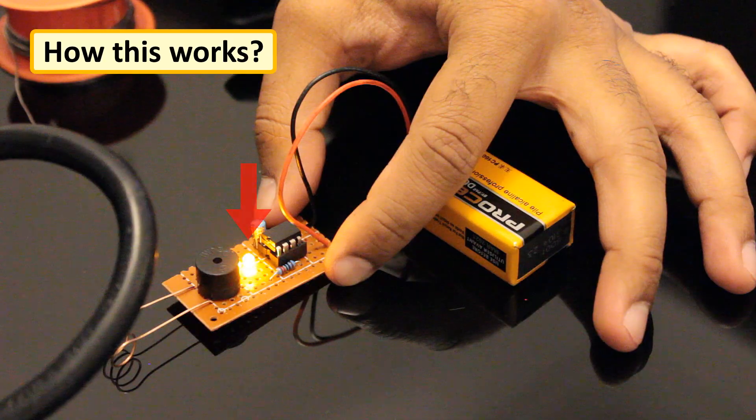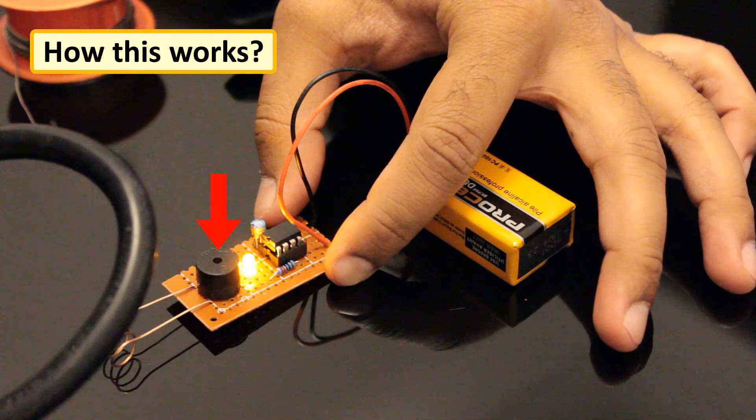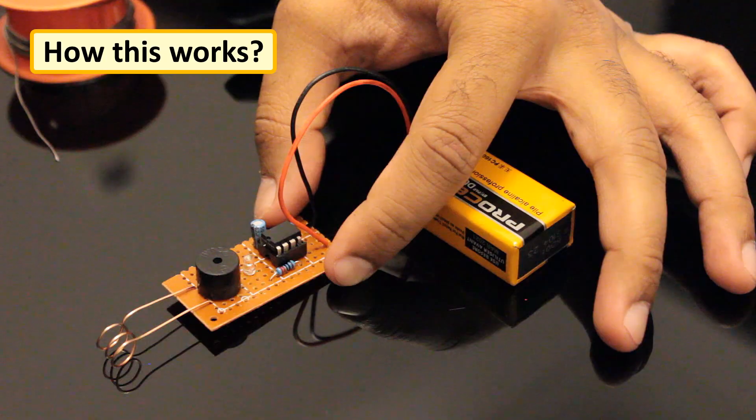By amplifying this current, we can light up an LED or a buzzer circuit indicating that the AC voltage is present.